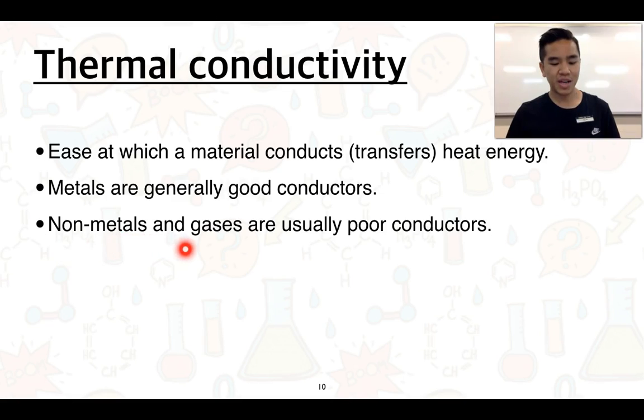Non-metals and gases are usually poor conductors. So an example of a non-metal material is something like rubber or plastic.